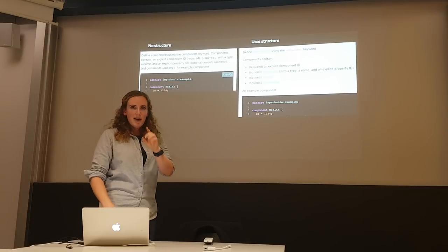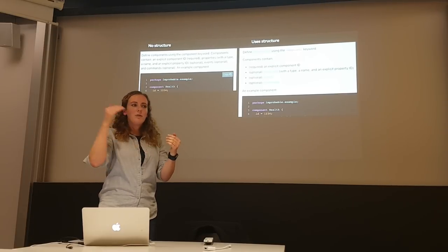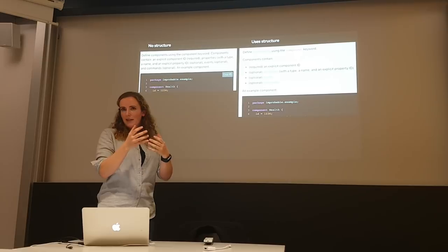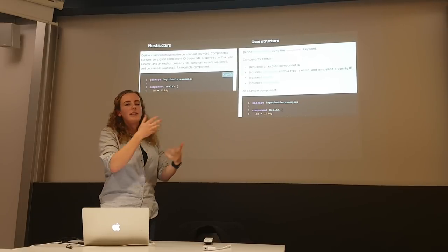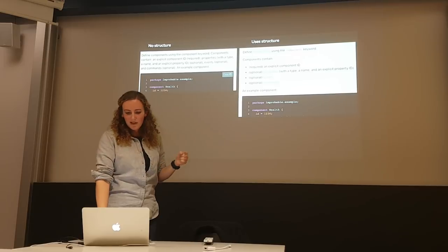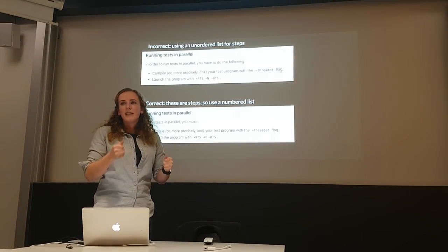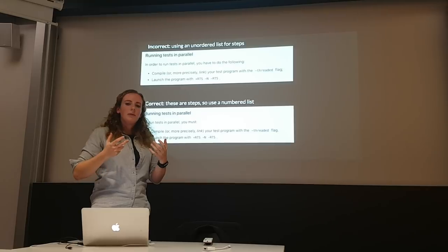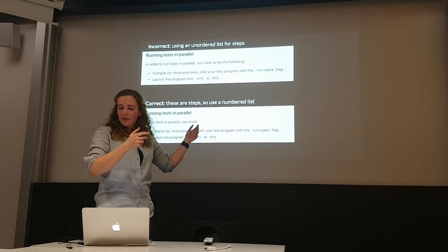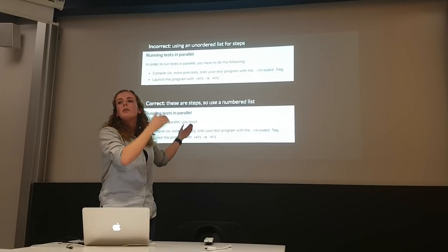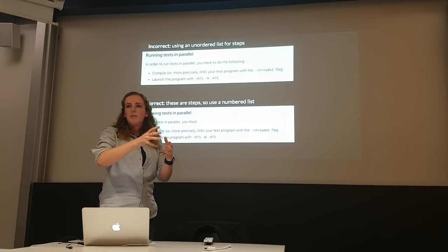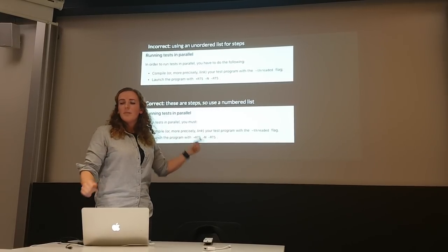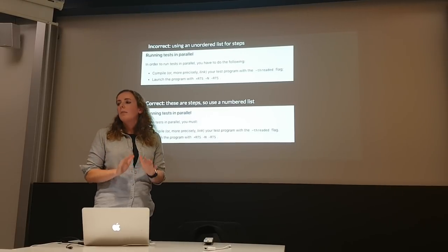On which type of list to use: unordered lists are for when order doesn't matter. The main time you really want to use a numbered list is when you're telling someone to walk through some steps. People write steps all the time with bullet points, which makes it really hard — if something is a numbered list of steps, you can tell at a glance that this is a set of stuff you need to go through, and it makes it much easier to track your progress. So if you're writing steps, definitely put them in a numbered list. It will make your documentation much better.